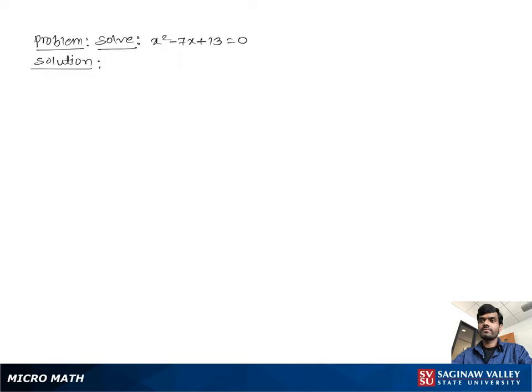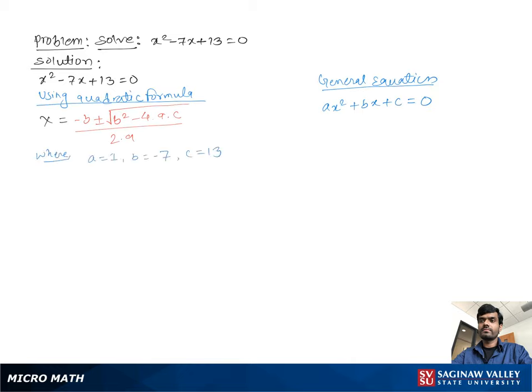Solve x squared minus 7x plus 13 equal to 0. Using the quadratic formula, x equals negative b plus or minus the square root of b squared minus 4ac, all over 2a.